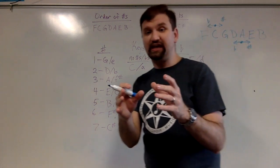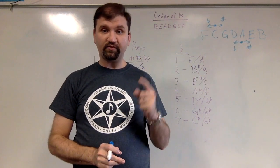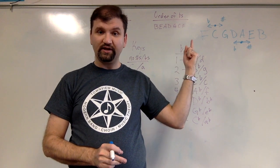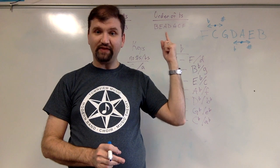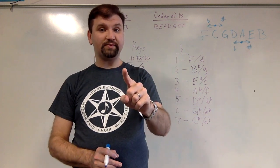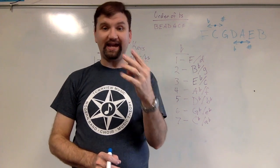one flat is the key of F, but one flat is not F flat. The order of my flats is B, E, A, D, G, C, F, which means that the first flat I come to is B and then E and then A and then D. So if I have one flat, it's B flat. But if I have four flats, it's B, E, A, D.